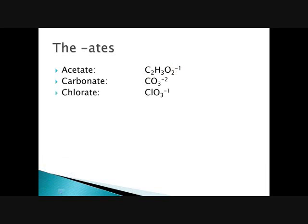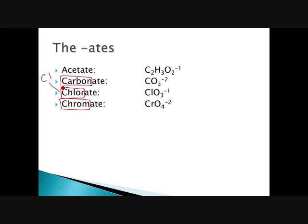Chlorate contains chlorine, so that's ClO₃ with a negative one charge. If it starts with 'chlor', you know we're talking about chlorine — it's Cl, not an I or a one. Chromate starts with 'chrom', has chromium in it, and is CrO₄ with a negative two charge. Carbonate starts with carbon — CO — so that helps you remember it has carbon in it. Acetate you can't get from the name.